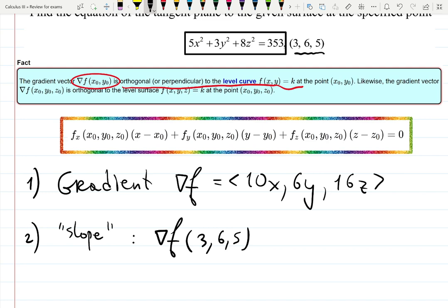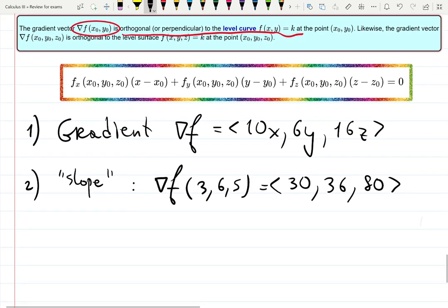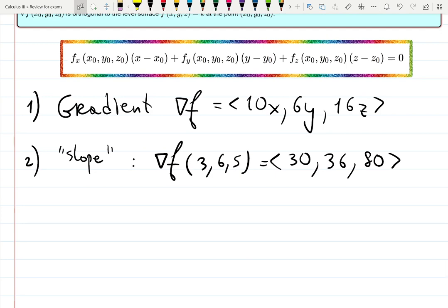This is the point we're looking at. That will be: 3 is x, so 30; y is 6, 6 times 6 is 36; z is 5, 5 times 16 is 80. That is my gradient vector at the given point.